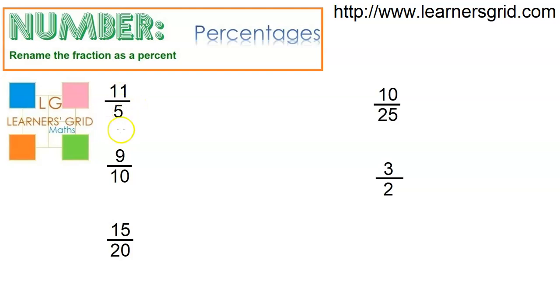If we have 11 over 5 here, we need to turn this denominator into 100. So how do we do that? Well, 100 divided by 5 is 20, so if I multiply by 20, whatever I do to the bottom got to do to the top. So 5 times 20 is 100, 11 times 20 is 220, and that means that the percent is 220 percent. Yes, you can get percentages that are greater than 100 percent.